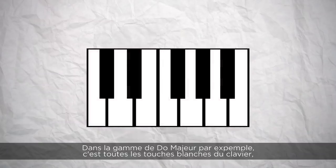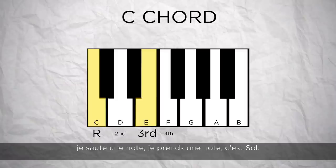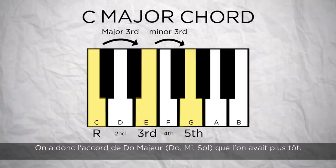So in the scale of C major — all the white keys on the keyboard — if I build a C chord, I start from C, leave a note, take a note (that's E), leave a note, take a note (that's G). So we have our major chord: C, E, G.